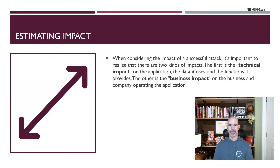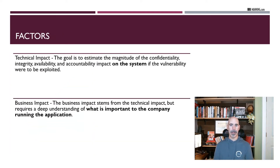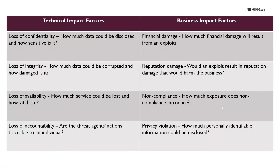When we estimate impact, we look at two different factors: technical impact and business impact. Technical impact comes down to understanding the magnitude of confidentiality, integrity, availability, and accountability impact on the system — the servers, the network, the data. Business impact means what is the impact to the business itself: is the business going to go bankrupt if something like this happens, or is this just going to be a small blip? Technical impact factors are loss of confidentiality, loss of integrity, loss of availability, and loss of accountability.